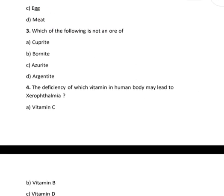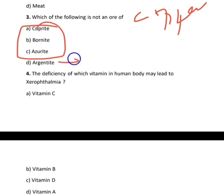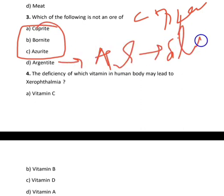The next question is which of the following is not an ore of copper? There are three copper ores given, but argentite is Ag2S and it is silver ore. The correct option is argentite.